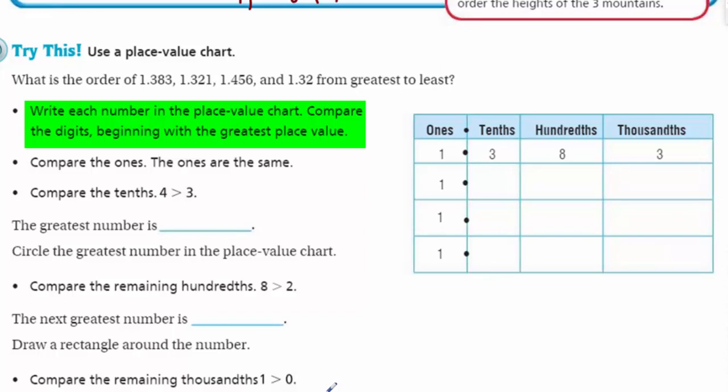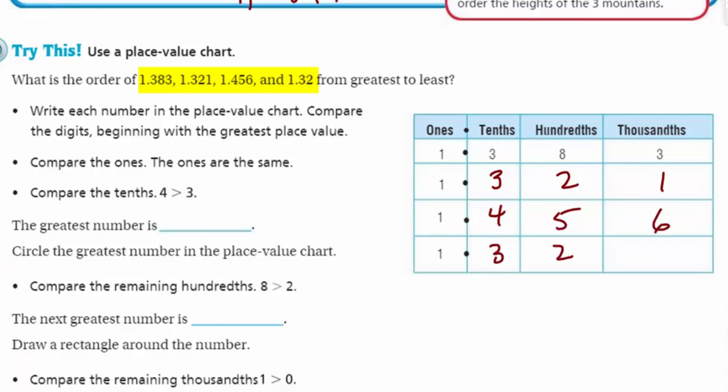It says write each number in the place value chart. Compare the digits beginning with the greatest place value. Then you're going to compare the ones. Here's, is it saying the ones are the same? They are. The ones are already listed. They're the same. So we're going to compare the tenths. And I have one point. So let's put three, three. So we're going to put one point three, two, one, one point four, five, six, and one point three, two. Okay. This is compare the tenths. Well, we have a winner. That's right. The four beat out the three. So the greatest number we already know, right, is one point four, five, six. Now let's just circle the greatest number in the place value chart. Circle it. Okay. I'll circle it.